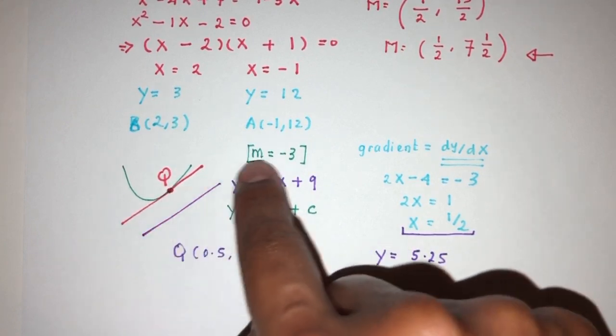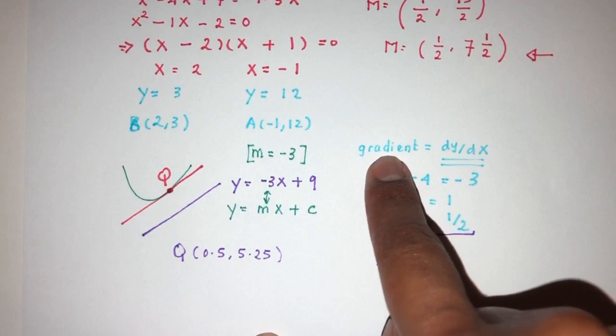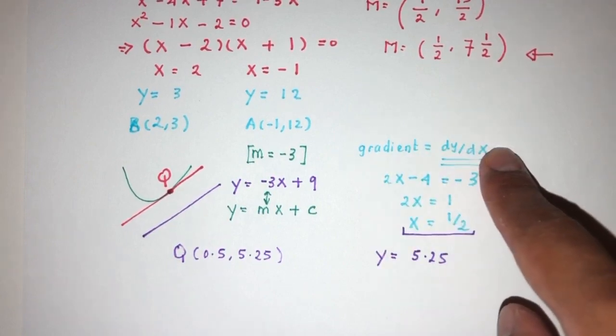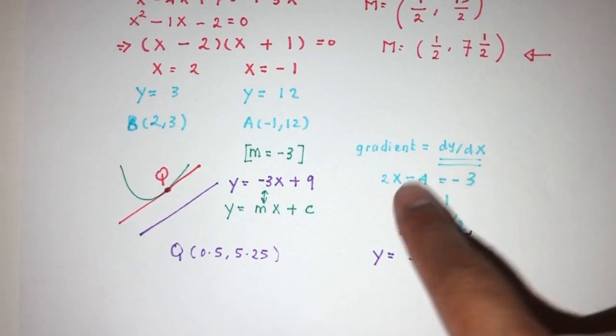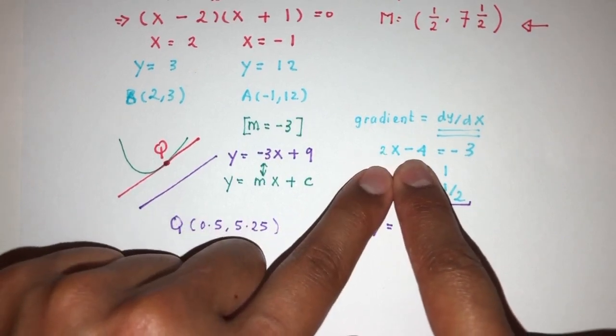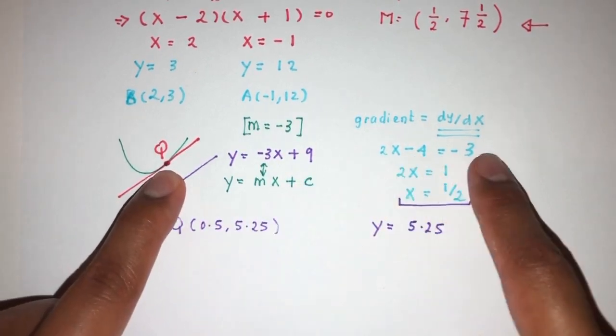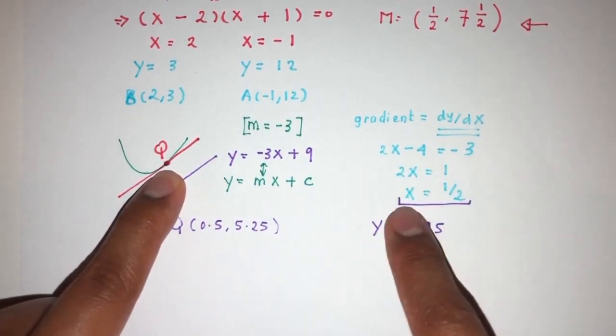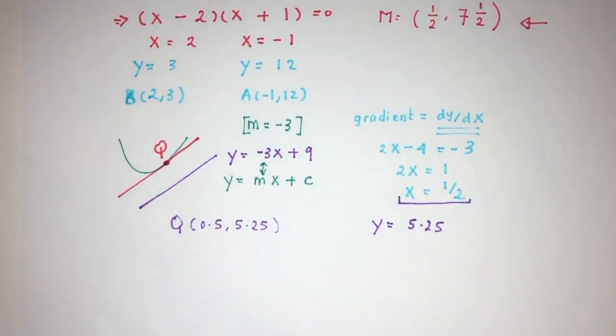We understand that at point Q, we also require that tangent to have the same gradient. Now, tangent, we understand the gradient is equal to dy/dx. We have to know this. dy/dx is found by this equation. We know the gradient has to be -3, then equate, solve for x and the final value of y. That's part 2.